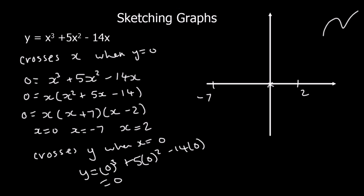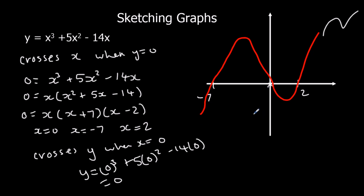We already know it crosses the y-axis at 0 since x equals 0 is one of our solutions. If we substitute x equals 0: 0 cubed plus 5 times 0 squared minus 14 times 0 equals 0 — we already knew that. So we just need to get the shape right: start at the bottom, go up, down, and up again. That's all you need for a sketch.